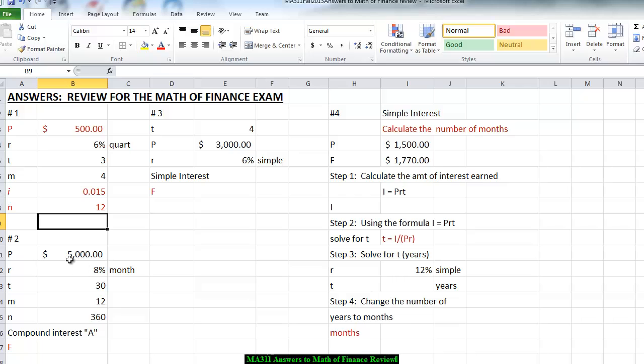Number two, what will $5,000 deposited at 8% interest compounded monthly be worth in 30 years? Again, we organize this information. The principal is $5,000. The interest rate is 8% compounded monthly. The time is 30 years. Since it's compounded monthly, M is equal to 12. And the N is equal to the 12 times the 30 tells us we have 360 interest periods.